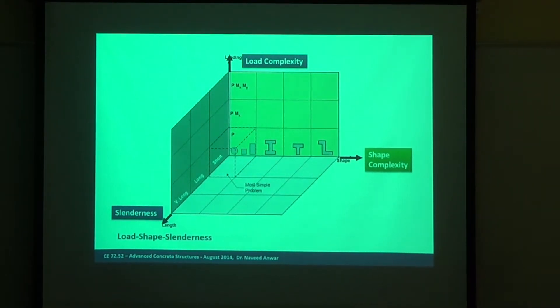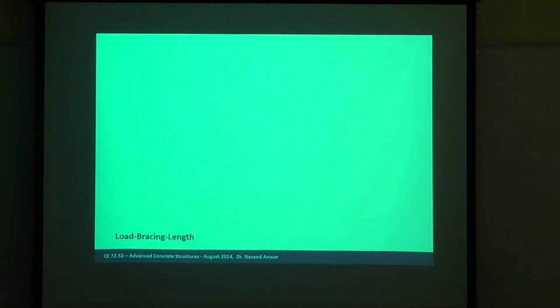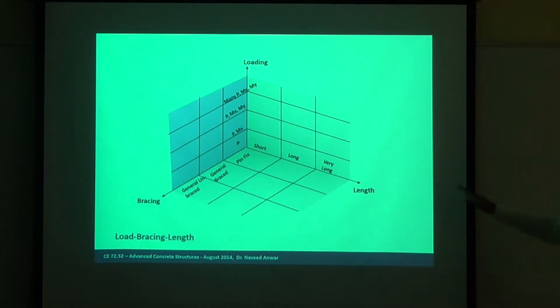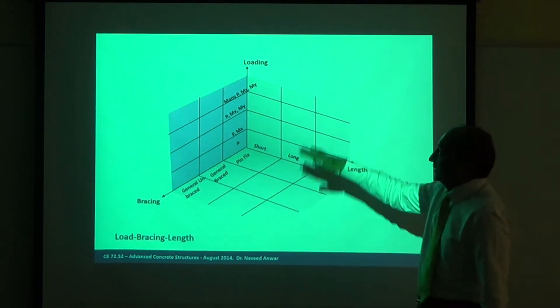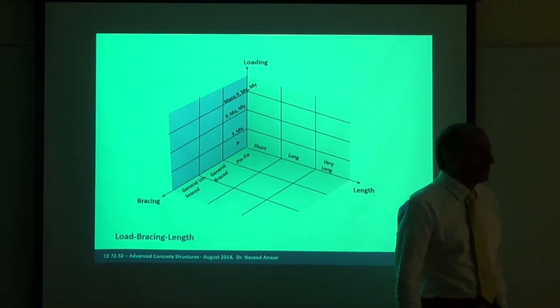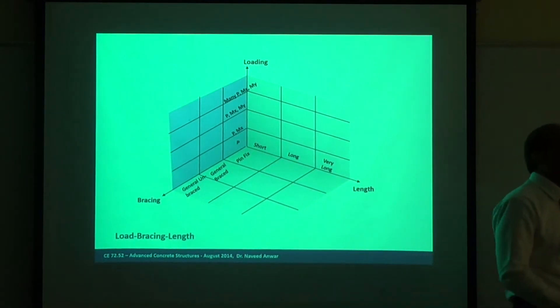But you do not have any knowledge about the length axis. The second complexity space comes from length, bracing, and loading interaction between other things, because column length is one factor, but also how the ends are connected is very important — whether the top and bottom framing is pinned, fixed, beams, or columns.